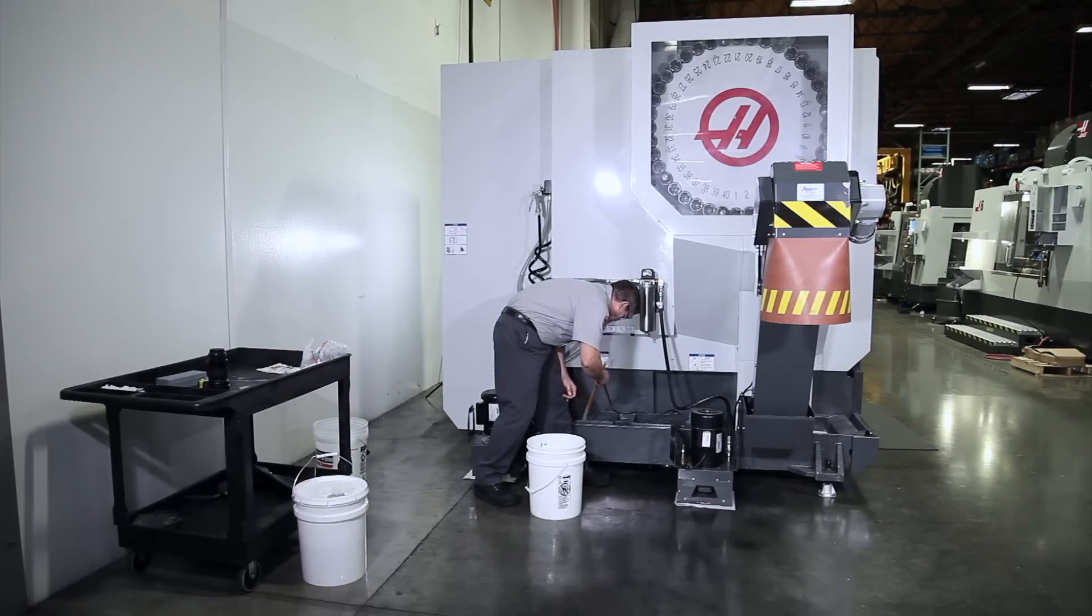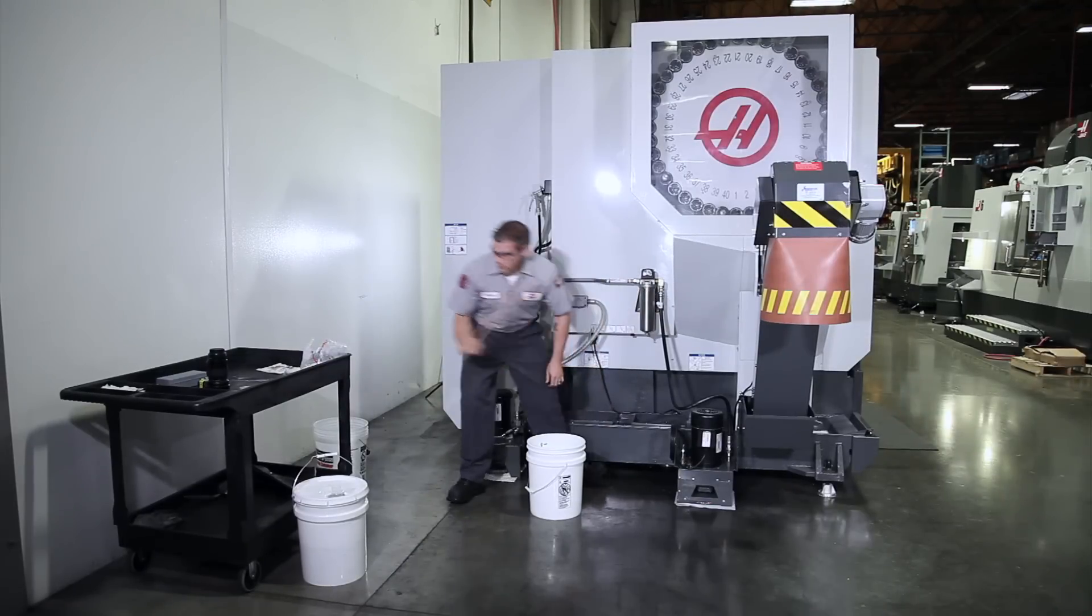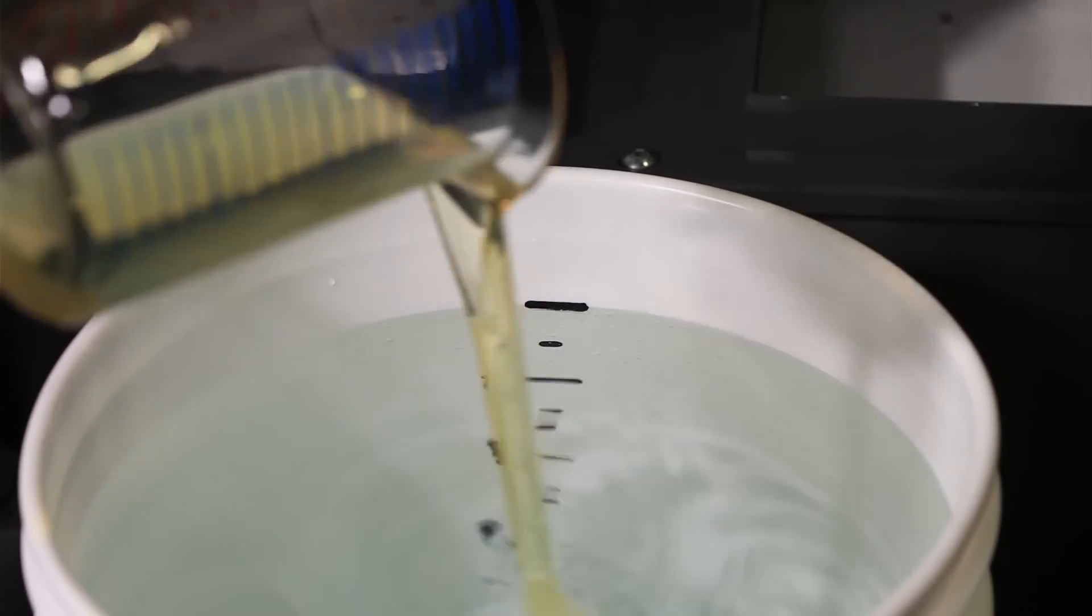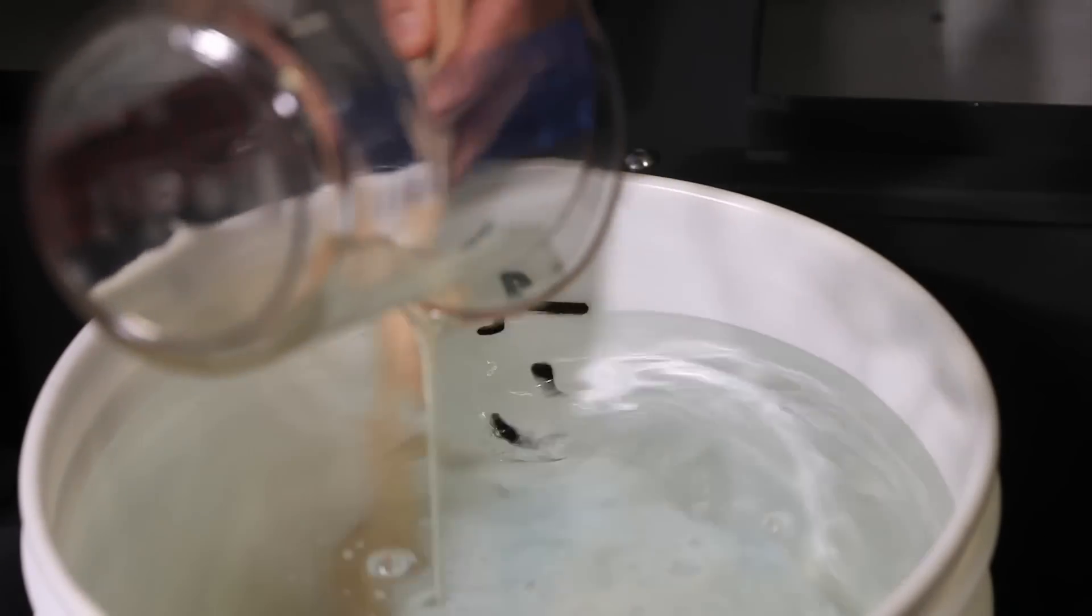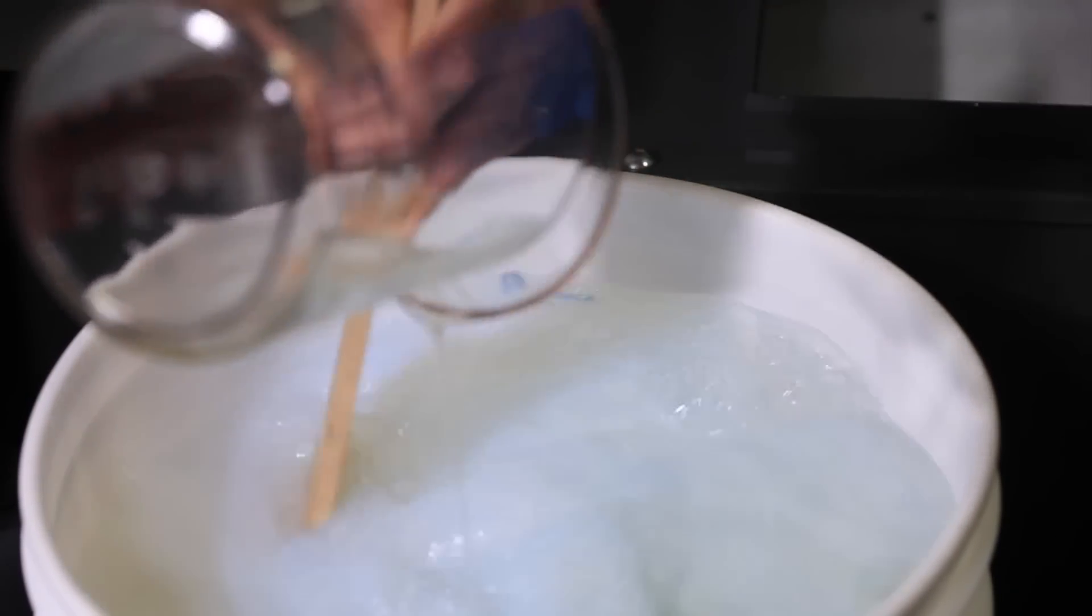The concentrate we're using for this machine doesn't emulsify very easily, so once again we'll make one percent buckets to fill the remainder of the tank.